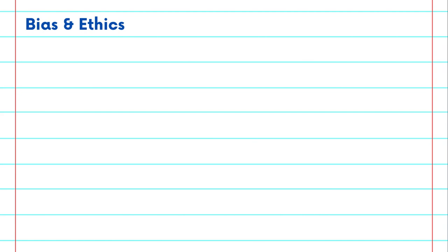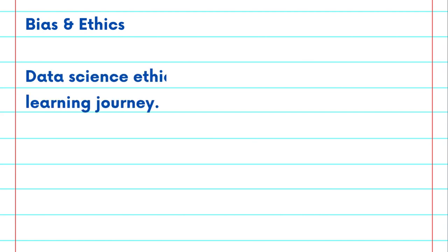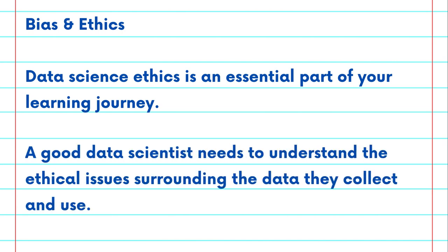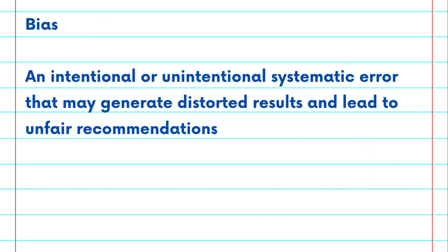Now, let's review bias and ethics. Data science ethics is an essential topic that the Northeast Big Data Innovation Hub promotes as a first step in your learning journey. A good data scientist needs to understand the ethical issues surrounding the data they collect and use. This is because of bias — an intentional or unintentional systematic error that may generate distorted results and lead to unfair recommendations.